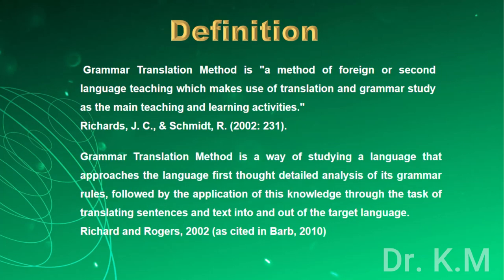Definition. Grammar translation method is a method of foreign or second language teaching which makes use of translation and grammar study as the main teaching and learning activities (Richards, J.C. and Schmidt, R., 2002, p.231). GTM is a way of studying a language that approaches the language first through detailed analysis of its grammar rules, followed by the application of this knowledge through the task of translating sentences and texts into and out of the target language (Richard and Rogers, 2002, as cited in Bob, 2010).